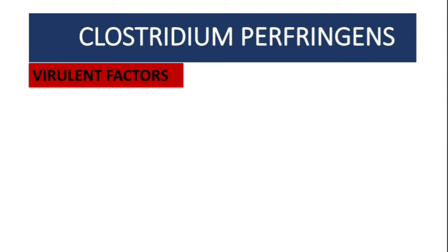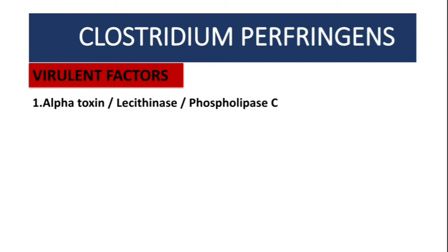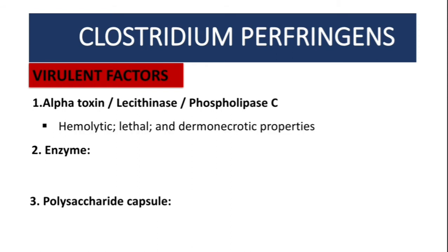Now let's talk about the virulence factors found in Clostridium perfringens. There are three: the first one is toxins, particularly the alpha toxin, also known as lecithinase or phospholipase C. The second one is enzymes, and the third is a polysaccharide capsule. The alpha toxin has hemolytic, lethal, and dermonecrotic properties.